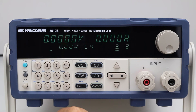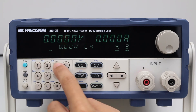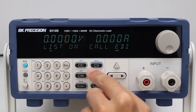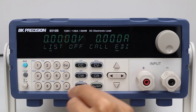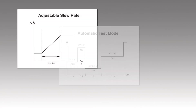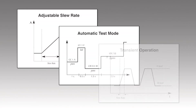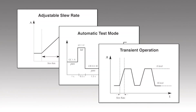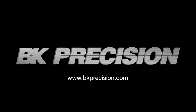To disable or exit list mode, enter list mode settings and press enter to turn list mode off. Along with list mode, the 8500B series supports many other programming features. Visit bkprecision.com to learn more.